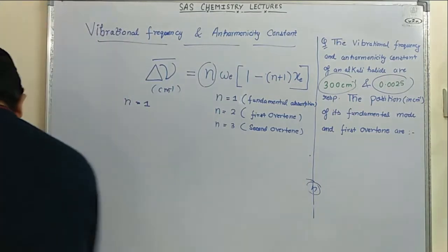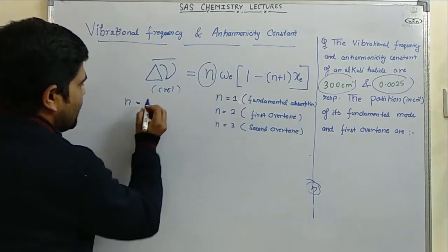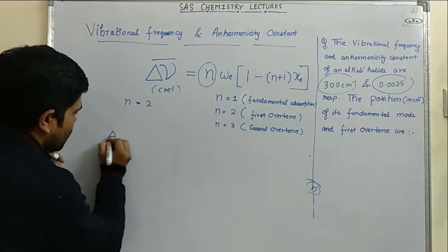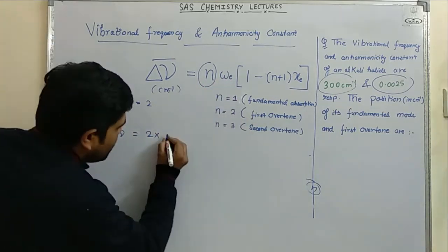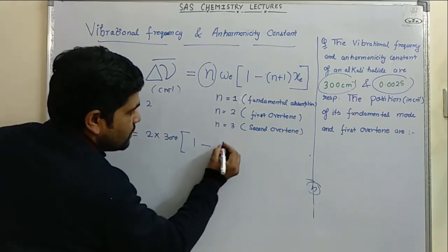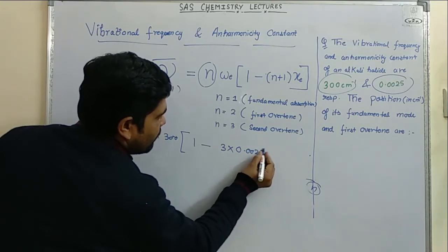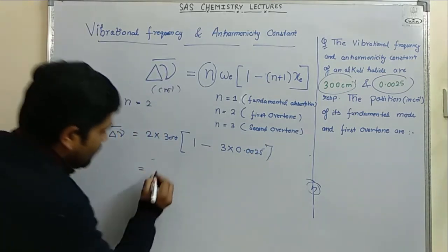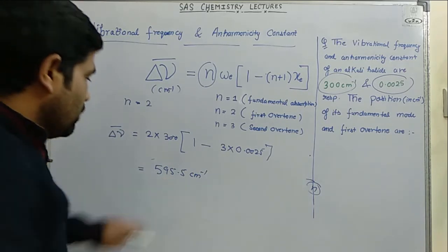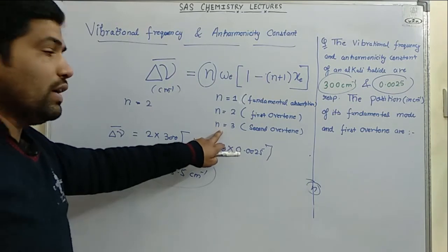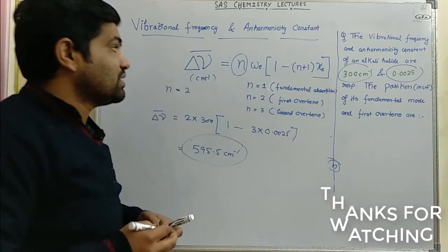Now for the first overtone, put n equals 2. Delta nu = 2 × 300 × [1 − (2+1) × 0.0025] = 600 × [1 − 3 × 0.0025] = 600 × [1 − 0.0075] = 595.5 cm⁻¹. So the first overtone is 595.5 cm⁻¹. If you also want the second overtone, use n equals 3.